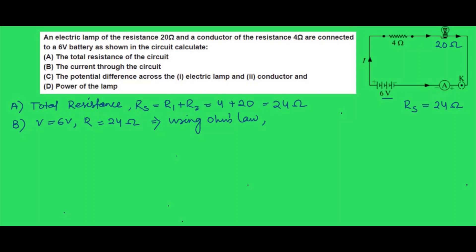Using Ohm's law, V = IR, so I = V/R = 6/24 = 1/4 = 0.25 ampere. So the current in the circuit is 0.25 ampere.